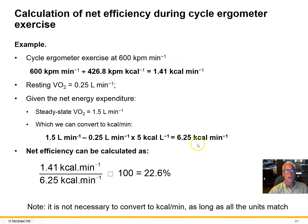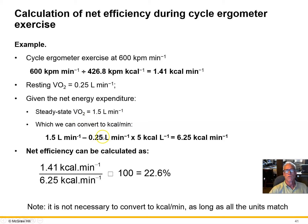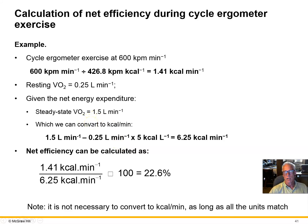The external work is 600 kgm/min. We figure that out from RPMs times the distance the wheel turns times the resistance. We divide that by the total energy cost of cycling — given as 1.5 liters per minute of oxygen — and subtract the resting oxygen consumption of approximately 0.25 liters per minute, then convert to kilocalories per minute. So 1.41 kcal/min of external work divided by 6.25 kcal/min of total energy cost above rest, times 100, gives us 22.6% efficiency.